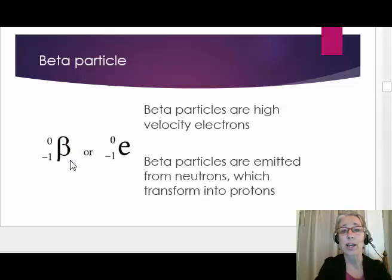A beta particle is an electron traveling at high speed. Again, these particles were discovered before the structure of atoms were determined, so scientists didn't have a name for electrons yet. We can use either the Greek letter beta or a lowercase e. Notice the mass number of zero and an atomic number of negative one. Beta particles are emitted from neutrons which then transform into protons.